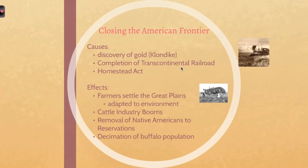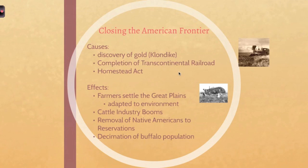Another big part contributing to the closing frontier is going to be the Homestead Act. This act was actually passed in 1862, and it said that any citizen could occupy 160 acres of government land, and if the settler improved the land — maybe used it for farming or made a home on it — after five years they would own that property. At this point in time, almost all the land from the Great Plains west was government land, even if Native Americans lived on it. So this was another huge factor in closing the frontier.